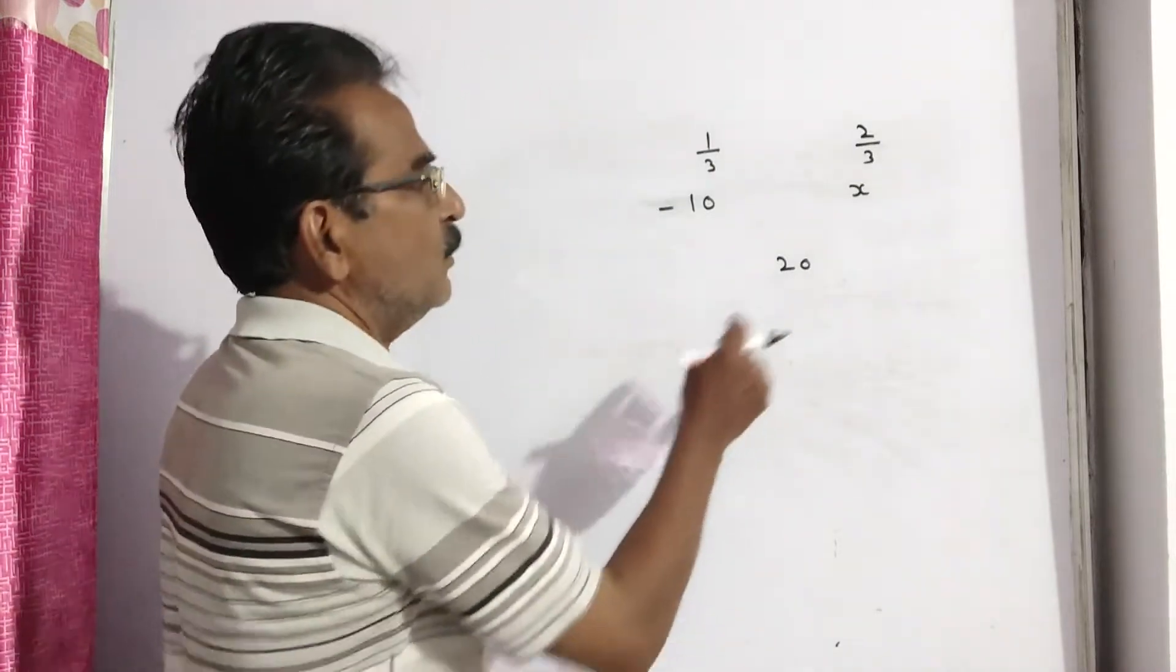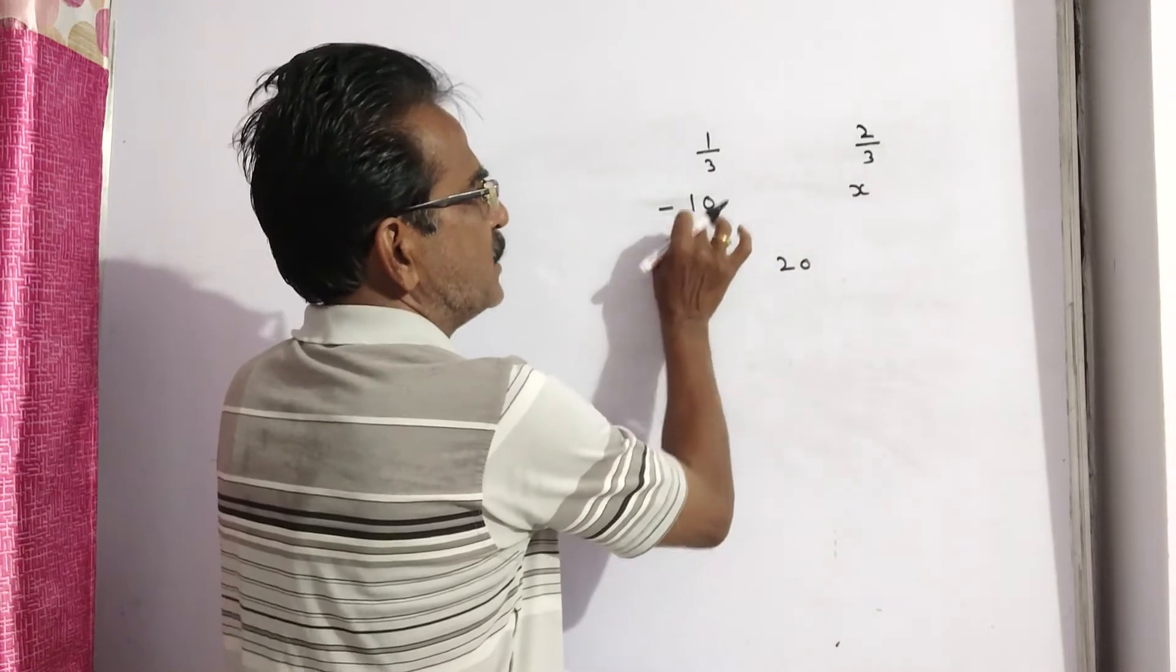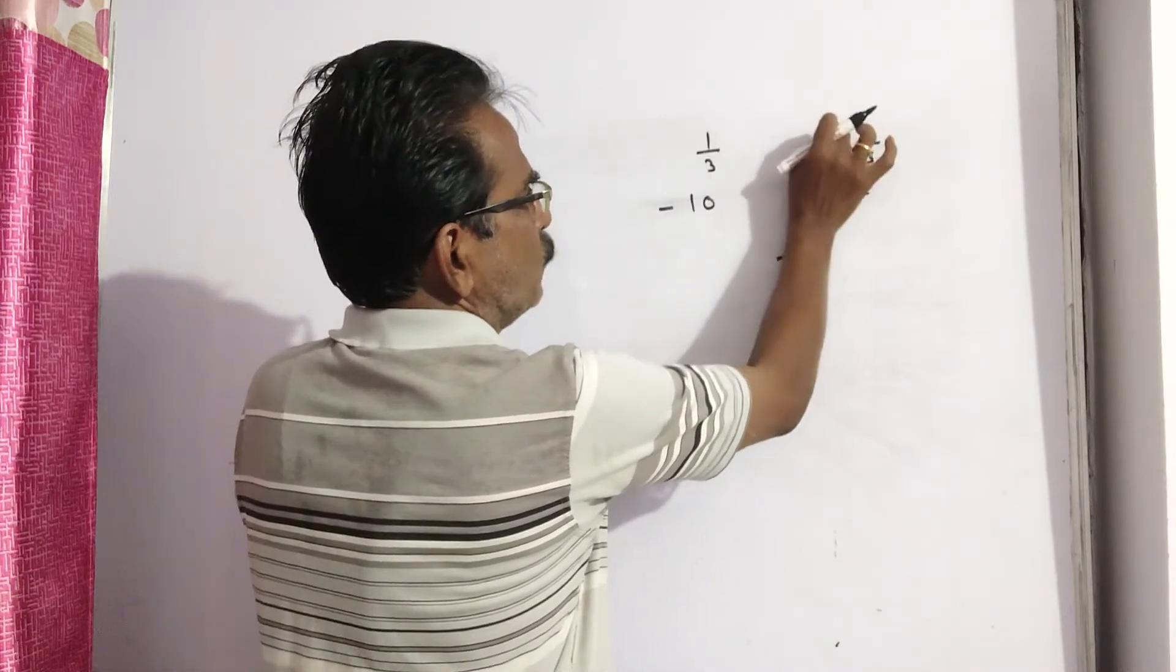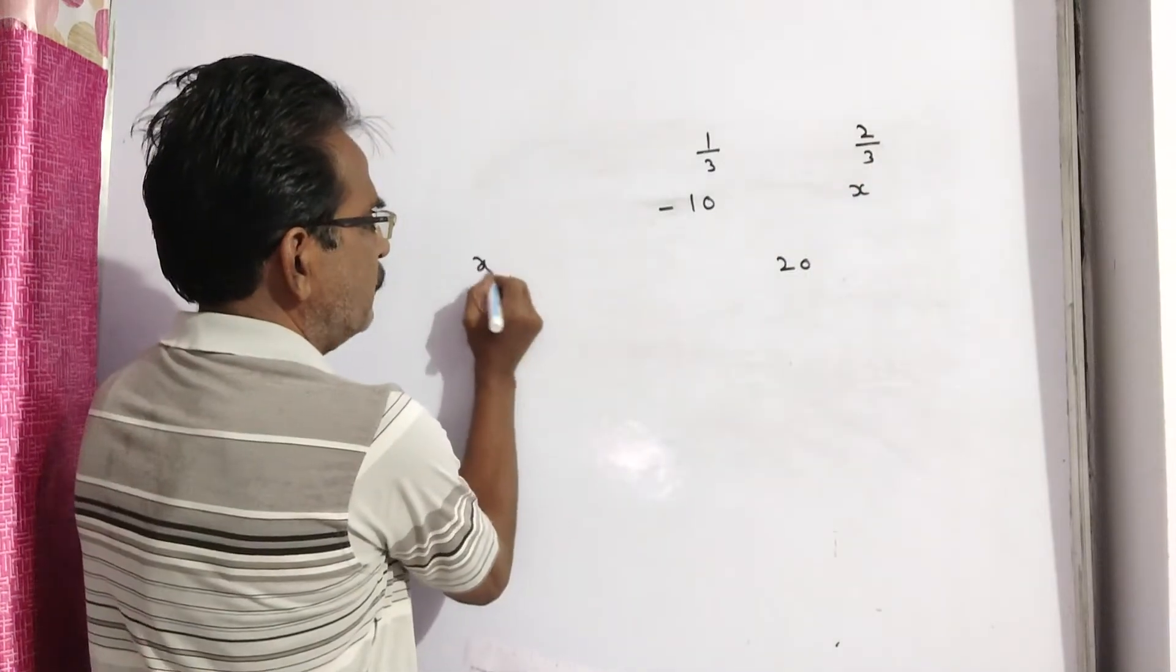So how do we get the quantities ratio? This minus this by this minus this is equal to ratio of these two things. These two things are quantities ratio. Now x minus 20